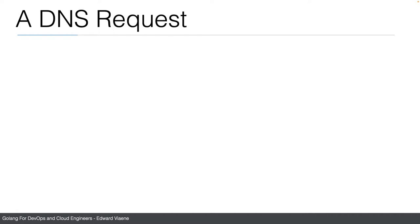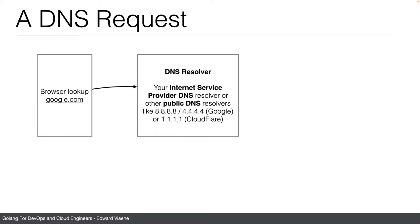So how does a DNS request look like? Your browser is going to do a lookup for, for example, google.com, and it's going to do this using a DNS resolver. Your internet service provider DNS resolver will be used, or other public DNS resolvers like 8.8.8.8 or 4.4.4.4, which is provided by Google. It's not because we are doing google.com — it's just something that Google provides.